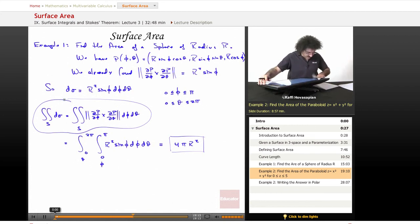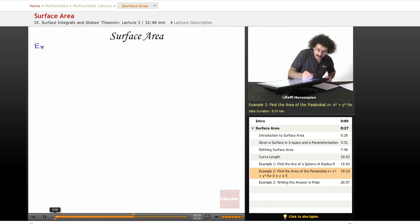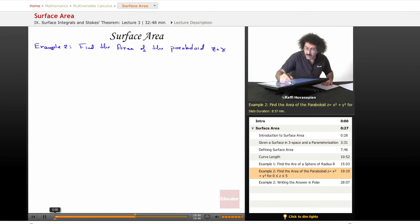Let's do another example here. All right, so example number two. We want to find the area of the paraboloid. Find the area of the paraboloid z equals x squared plus y squared, for z greater than or equal to zero and less than or equal to five.